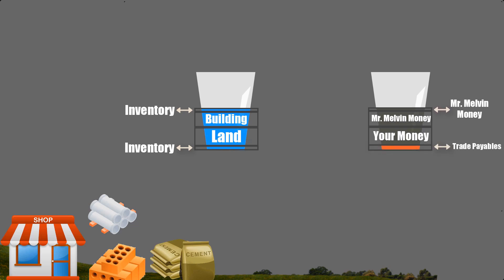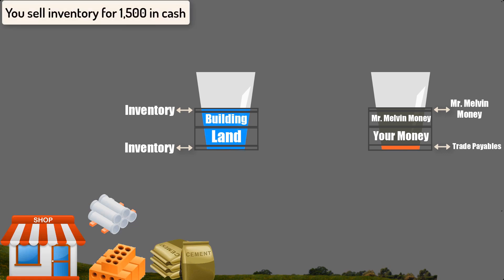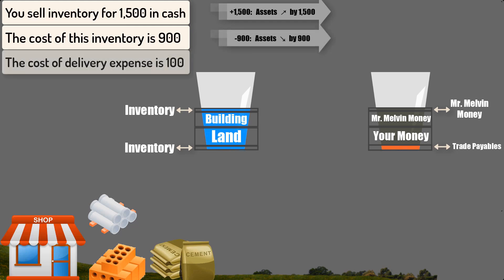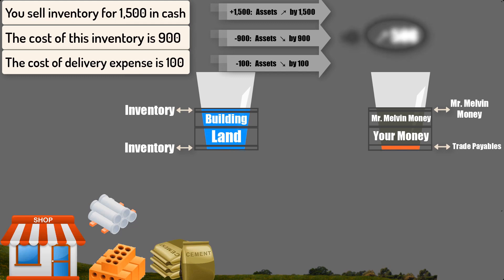Now we are in business and you make your first sale. You sell inventory for 1,500 in cash, so assets increased by 1,500. The original cost of this inventory is 900, so since we don't have this inventory anymore, we deduct its value from assets. We also paid 100 in cash for delivery expense, so assets decreased by 100. The net effect on assets is an increase of 500, which occurred due to profit. Who takes this profit? It is the owners — you and Mr. Melvin. Thus, the mirror image of this increase is equity.